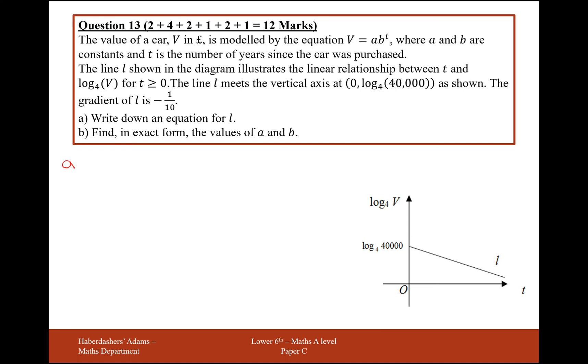Write down an equation for L. Well, we know the gradient here is minus a tenth and the y-intercept is log base 4 of 40,000. So all this needs is a y equals mx plus c effectively. So for y, that's going to be the y-axis here, which is log base 4 of v equals m, which is minus a tenth times that by x, which is effectively t here, plus c. And c is effectively here log base 4 of 40,000.